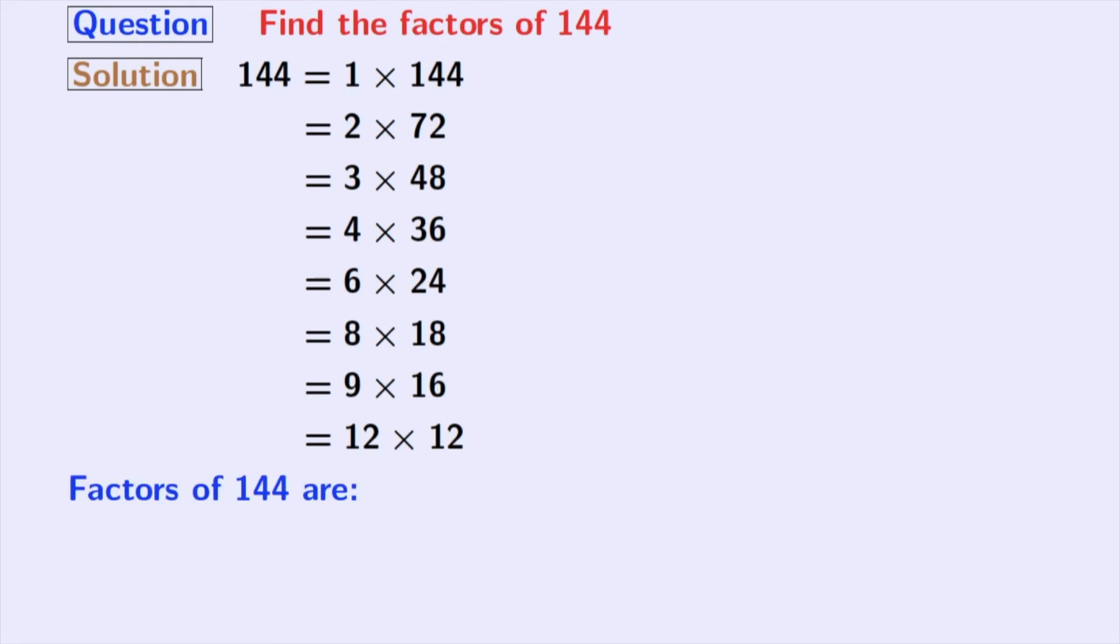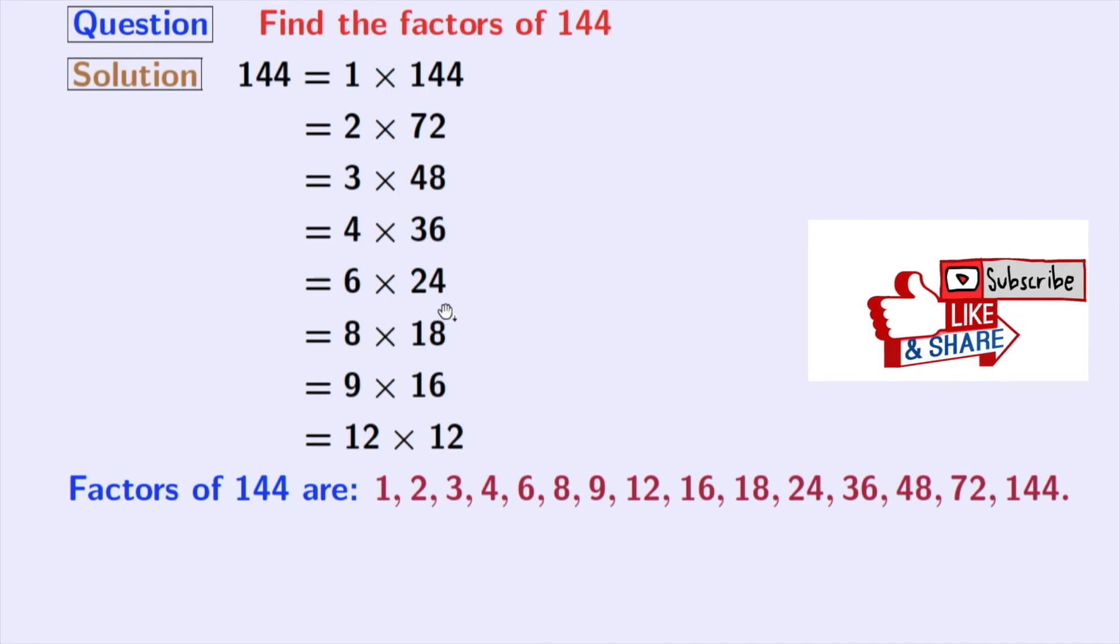Thus, we have all the factors of 144 which are 1, 2, 3, 4, 6, 8, 9, 12, 16, 18, 24, 36, 48, 72 and 144. So, the total number of factors of 144 is 15.